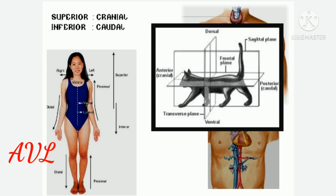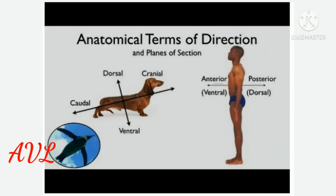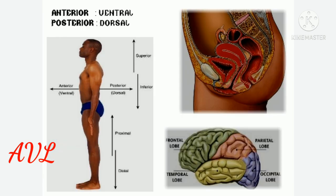Superior (cranial or rostral) means above or towards the head region — for example, the heart is superior to the liver. Inferior (caudal) means below or towards the foot end — for example, the stomach is inferior to the lungs. Anterior (ventral) means nearer to the front of the body — for example, the trachea is anterior to the esophagus. Posterior (dorsal) means nearer to the back of the body — for example, the rectum is posterior to the urinary bladder.